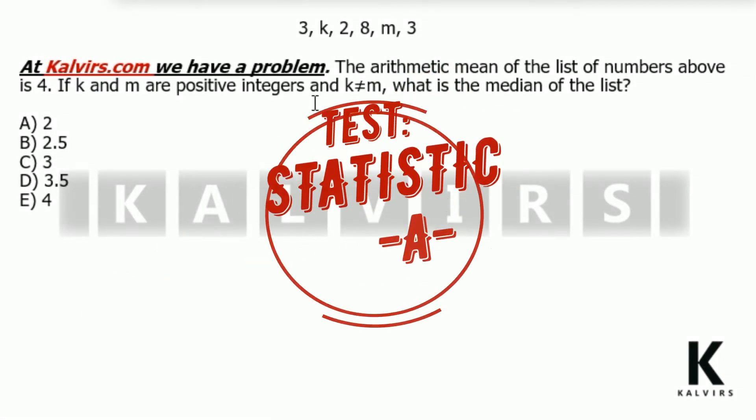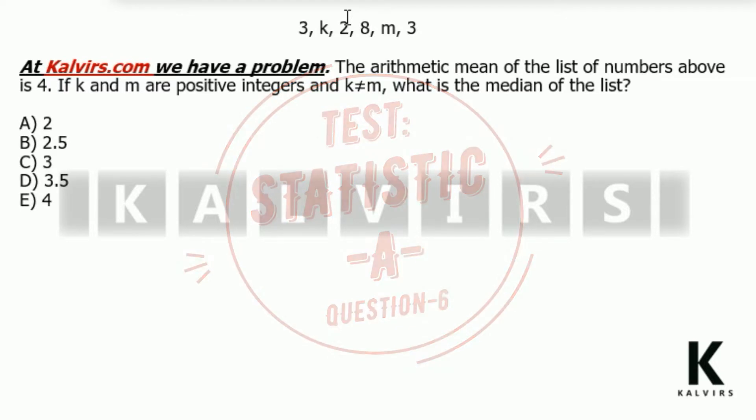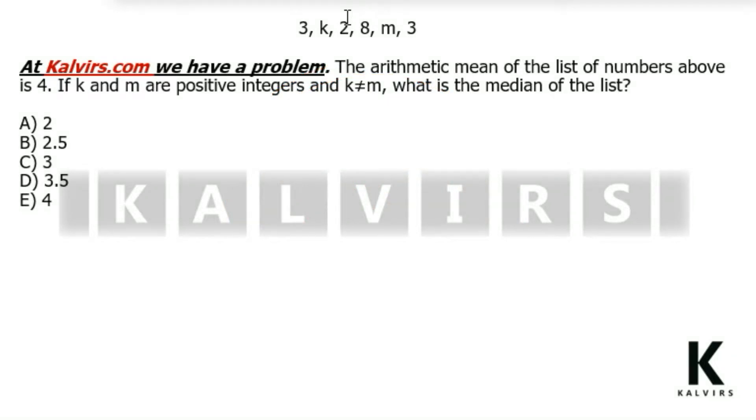Hello, this is Kalvirs Consulting and we are here to solve this question. The arithmetic mean of the list of numbers above is 4. If k and m are positive integers and k is different to m, what is the median of the list?